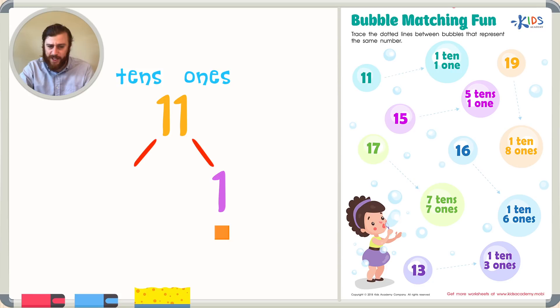If you look at the 1 in the tens place, I know that's made up of 1 ten. 1 ten really represents 10 cubes, or 1 long. So if I look back at the answer choice and I see 1 ten and 1 one, I know that that's correct. That is the same thing as 11. Let's go ahead and trace on that dotted line.